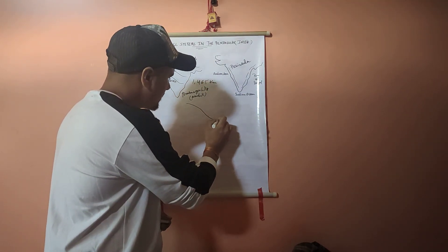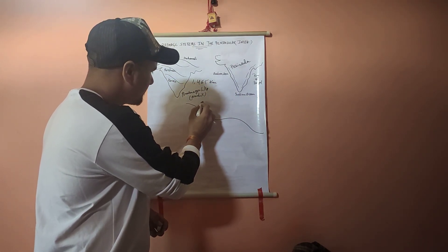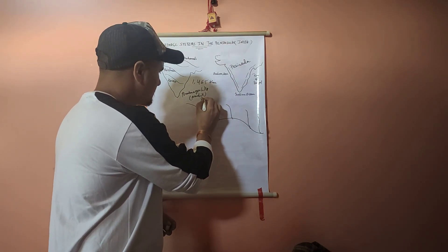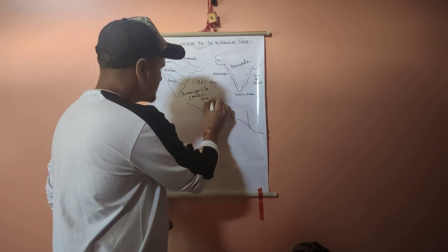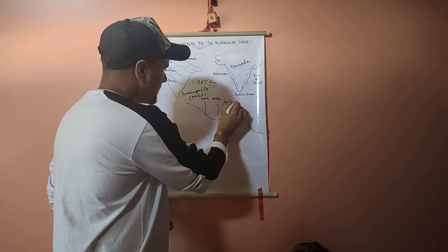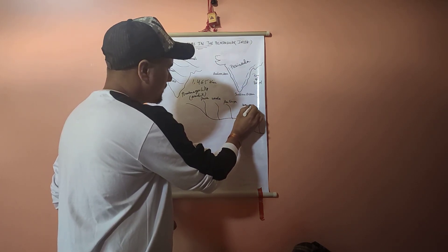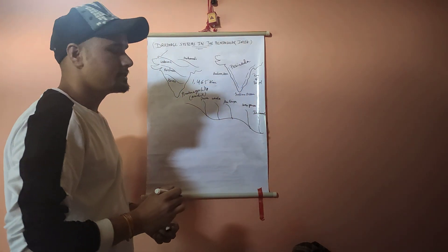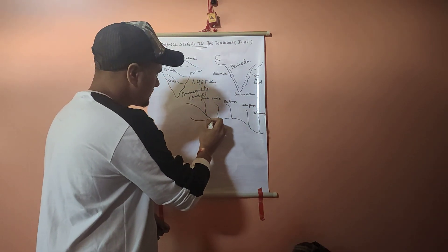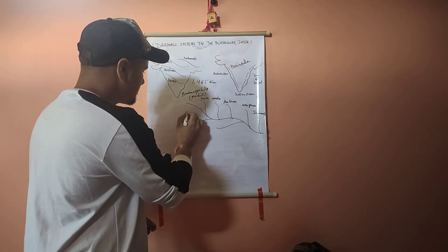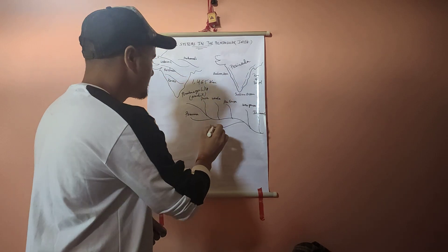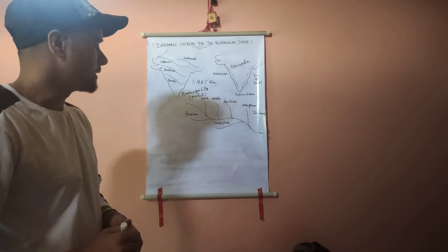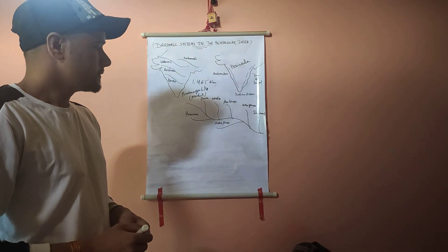Many tributaries join the Godavari on its left and right banks. The left bank tributaries are: Purna, Wardha, Wainganga, Pranhita, and Indravati. The right bank tributaries are Pravara and Manjira.